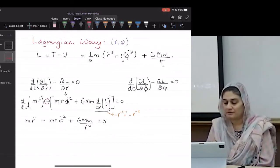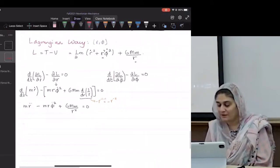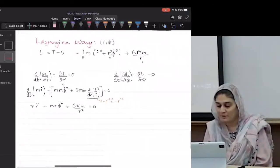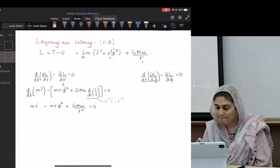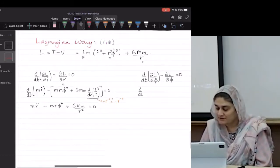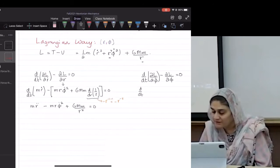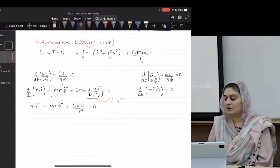Okay, so now on the other side, what will we get? d/dt of φ̇ will be m·r²·φ̇ equals zero. What is m·r²·φ̇?